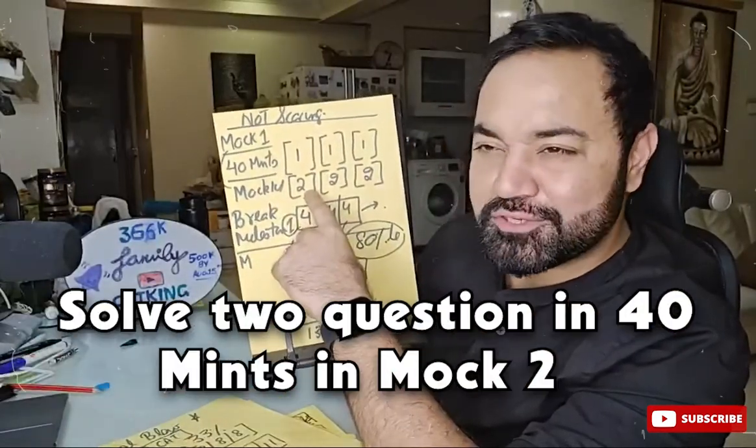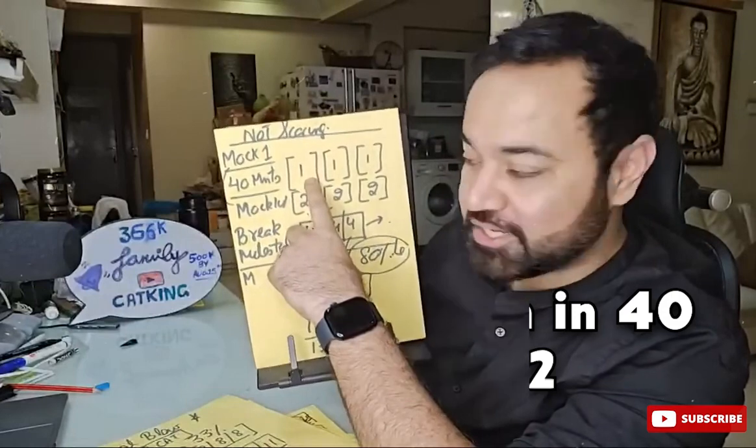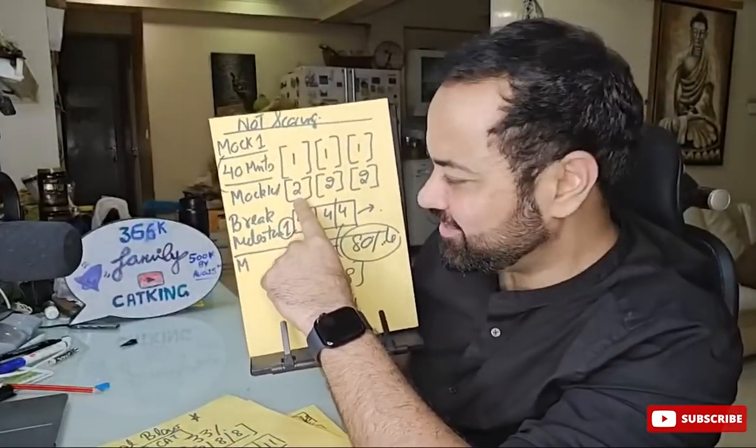Doosra. Aagle mock mein koshish karo do number. Yeh 40 minute par question hai. Yeh 20 minute par question hai. What? Yes.